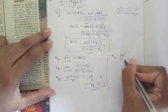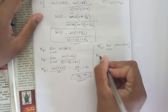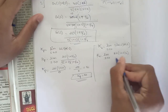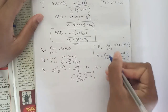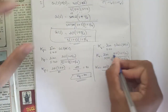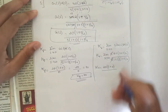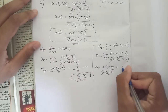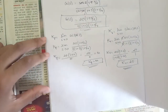For Kv, the formula is limit as s→0 of s·G(s)·H(s). Substituting s into 20·(1 + s/2) divided by s·(1 + s)·(1 + s/4), the s in the numerator and denominator cancel. Applying the limit: 20·(1 + 0) divided by (1 + 0)·(1 + 0) equals 20. So Kv equals 20.